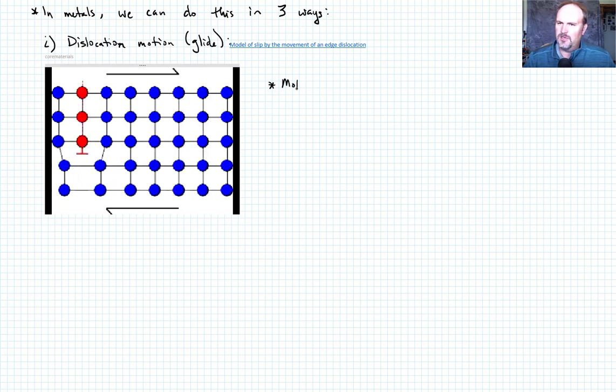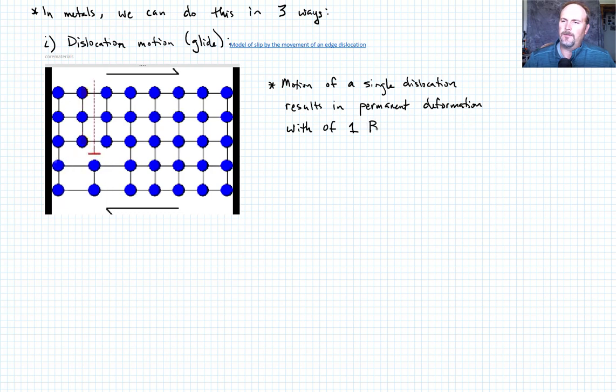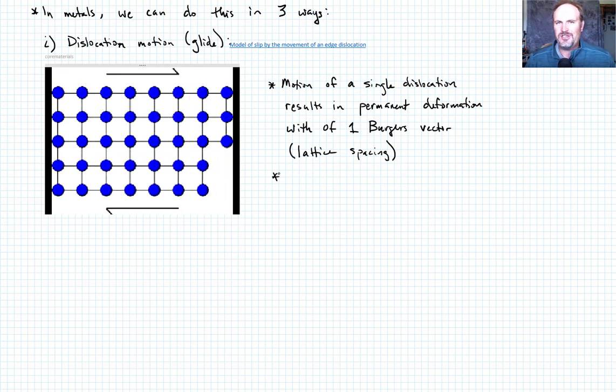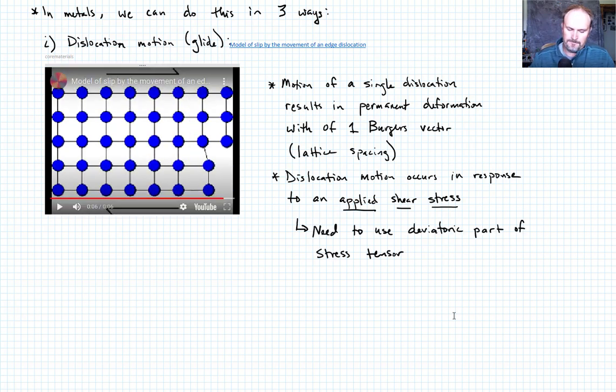So a couple things. Motion of a single dislocation results in permanent deformation with the magnitude of one Burger's vector. And in this particular image, we could just call that the lattice spacing. The other important feature to note about this illustration is that dislocation motion occurs in response to an applied shear stress. What that should hopefully tell you is that we need to use the deviatoric part of the stress tensor in order to link this to sort of the mechanics that we've talked about in previous lecture.